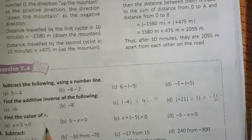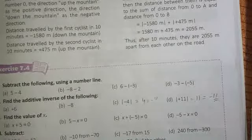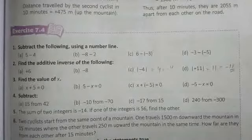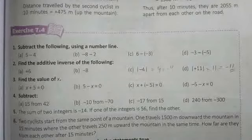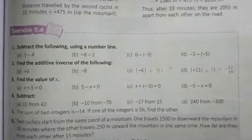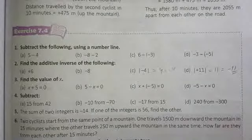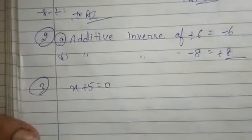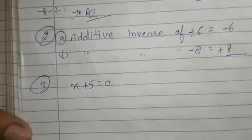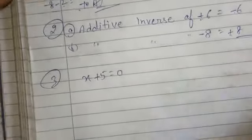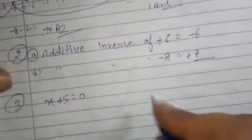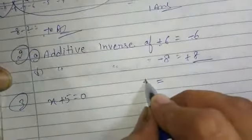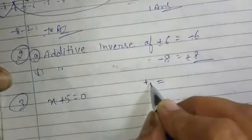Now, find the value of x. अब यहाँ पे हमें x की values find करनी है. Value हमें क्या दे रखी है? x plus 5 is equal to 0. अब देखो, equal का symbol आ गया.